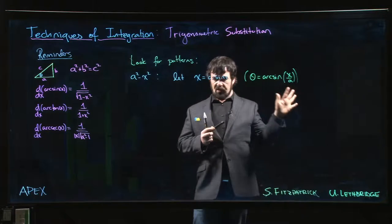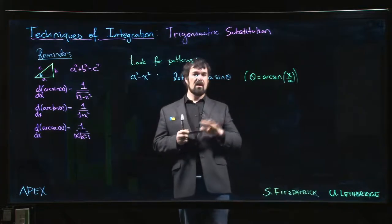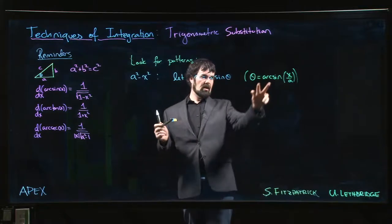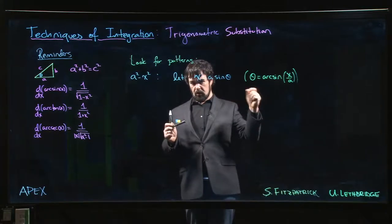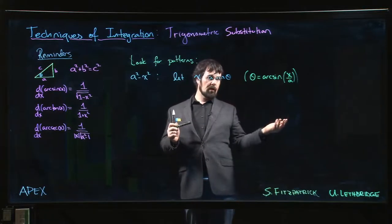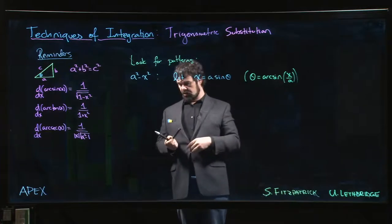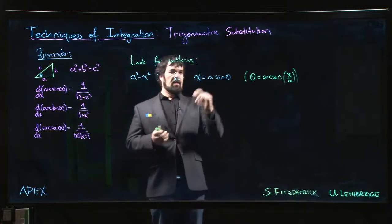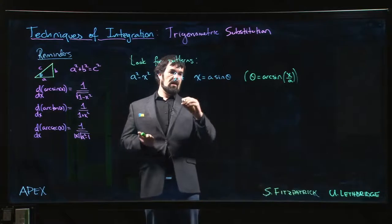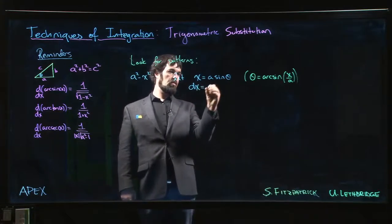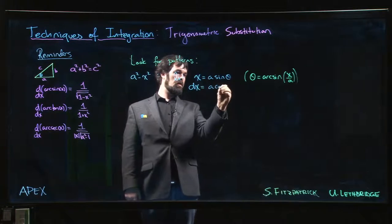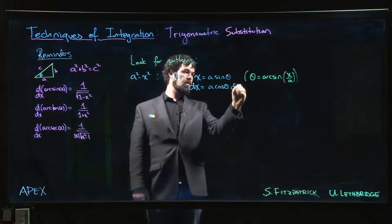Most of the time this distinction doesn't matter, but occasionally we have to pay attention to domain issues and realize that the inverse trig functions have carefully defined domains and ranges. So sometimes that's something you've got to pay attention to. Now, if x equals a sine theta, then dx will be a cos theta d theta.